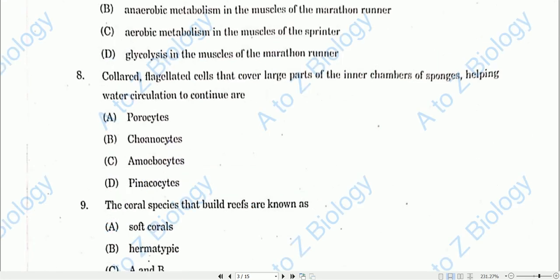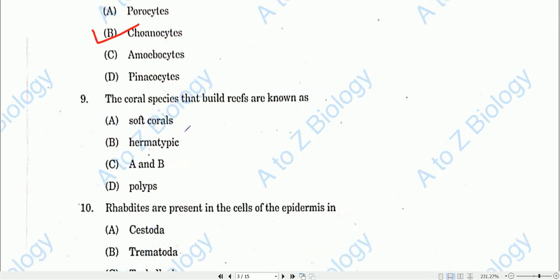Question number eight: Collar flagellated cells that cover large parts of the inner chambers of sponges, helping water circulation, are called choanocytes. Option B will be the correct one.